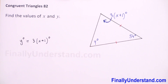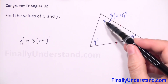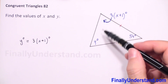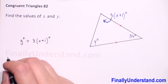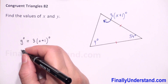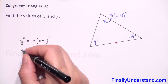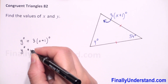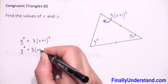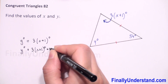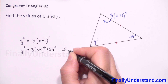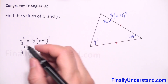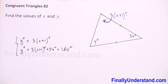So we have one equation. For the second equation, we know that the measure of interior angles of a triangle is 180 degrees. So we have: y degrees plus three times x plus one degrees plus 54 degrees is equal to 180 degrees. We have two equations and two unknowns.